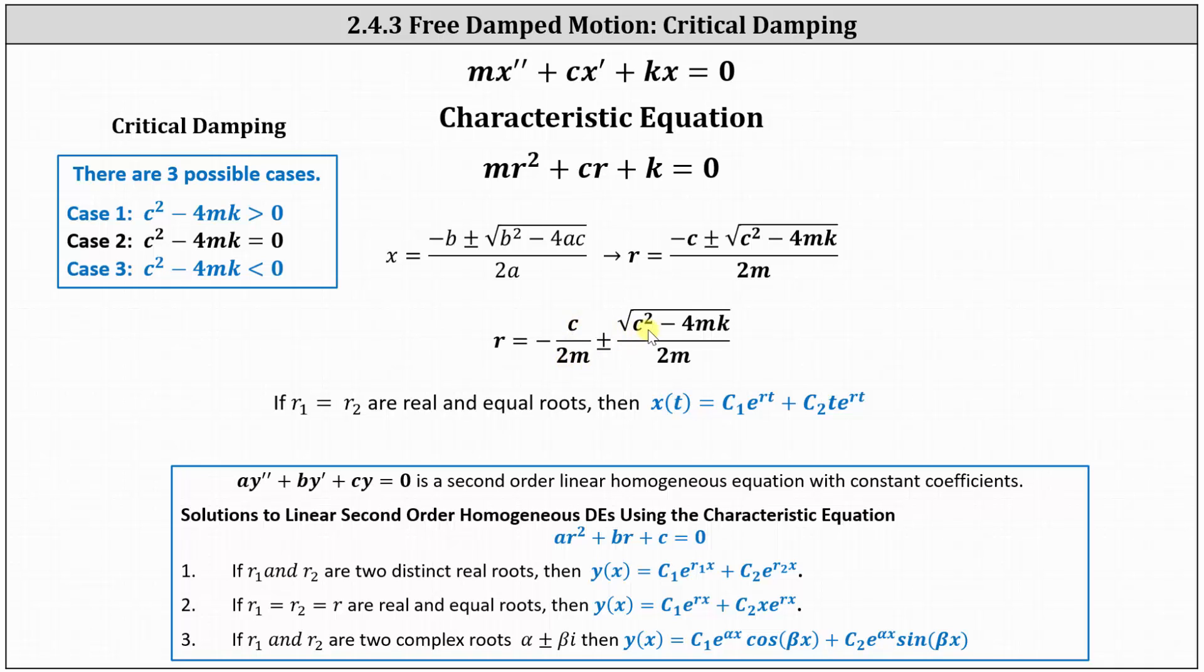Because c squared minus 4mk equals zero, the general solution is x of t equals c sub one times e to the rt plus c sub two times t times e to the rt. Again, this should seem familiar. It's the same thing we were doing before, except now the general solutions are x of t rather than y of x.